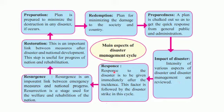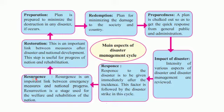Then comes the response — response to the disaster is to be given immediately after the incident, and this factor follows the disaster strike in the cycle. Coming to resurgence, which means rising back to life: everything had gone into lockdown but gradually things started coming back to normal and step by step things were unlocked. Resurgence is an important link between emergency measures and national progress. Resurrection means regeneration — after the disaster, things need to get back to normal and the nation needs to progress.